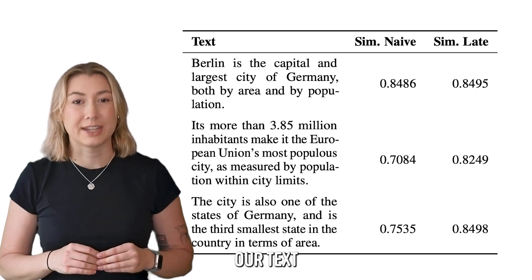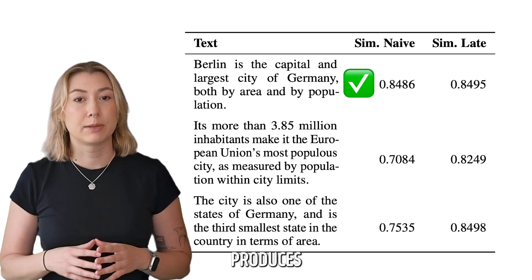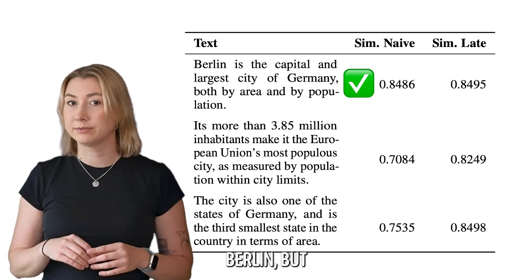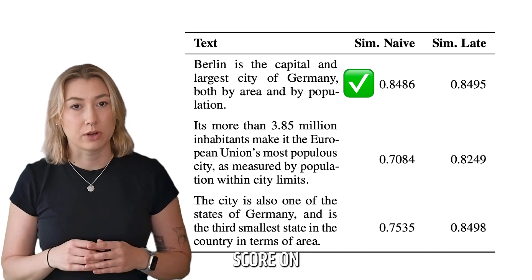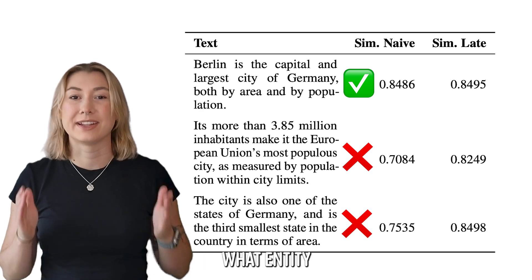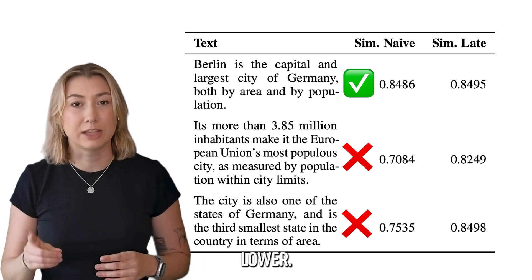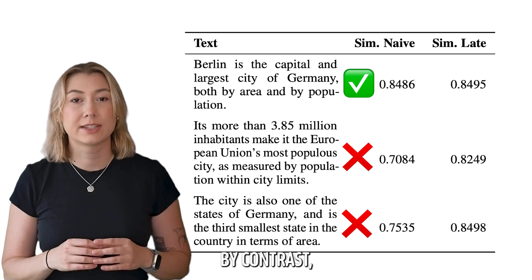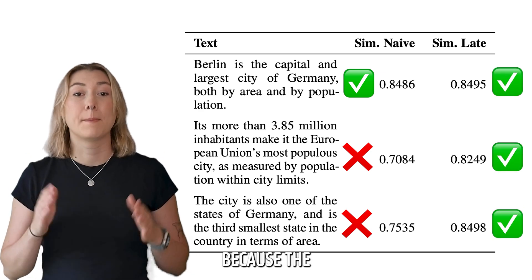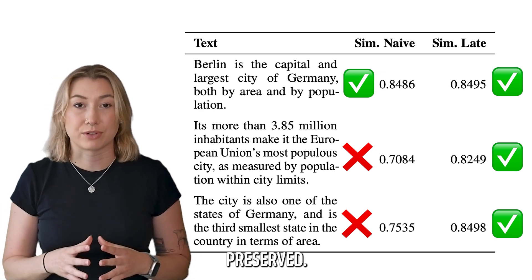Let's revisit our text example from earlier. When we query this text with the word 'Berlin,' naive chunking produces a high similarity score for the first text directly mentioning Berlin, but a lower score on text just saying 'its' or 'the city.' Naive chunking has no idea what entity 'it' or 'the city' referred to, so that similarity score is incorrectly lower. By contrast, late chunking preserved the same similarity score between all three sentences, because the contextual information about that entity, Berlin, is preserved.